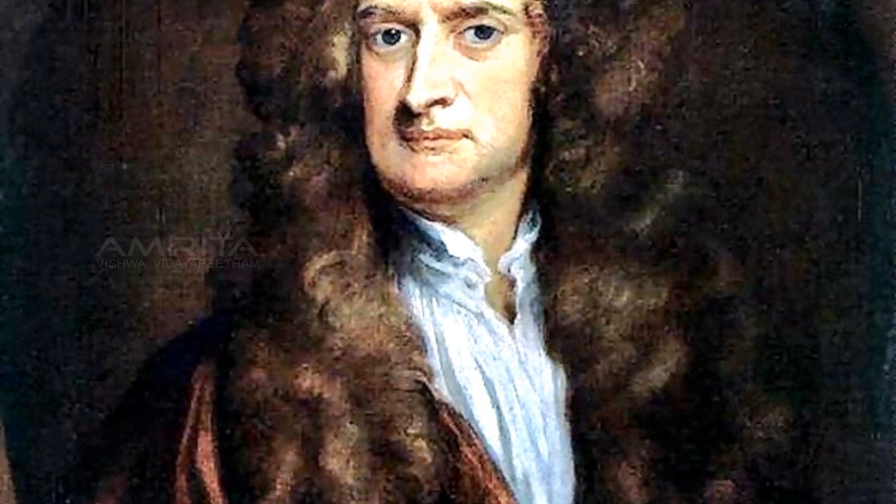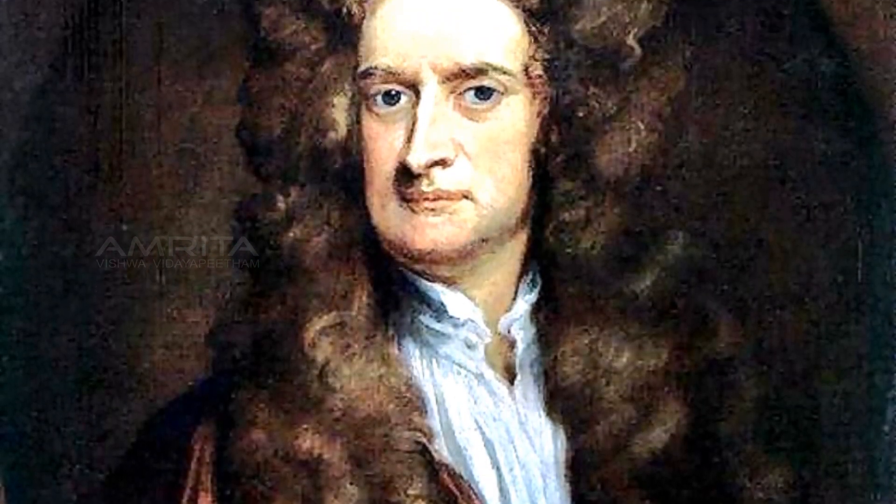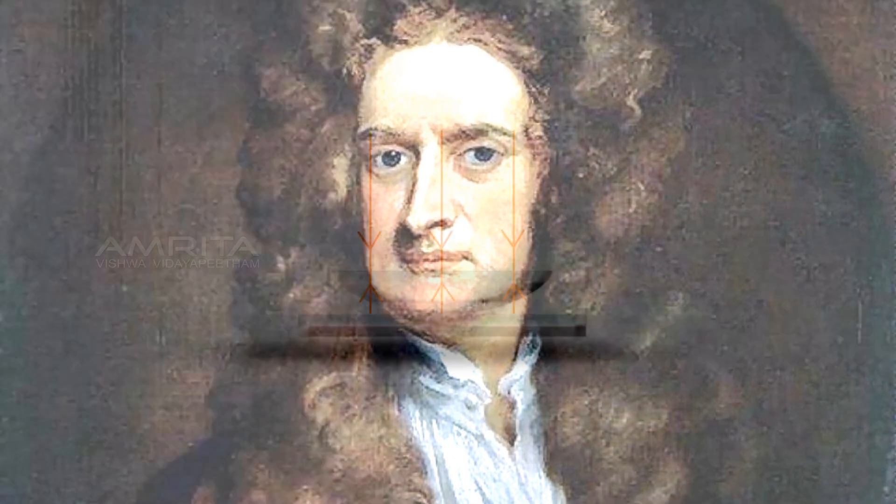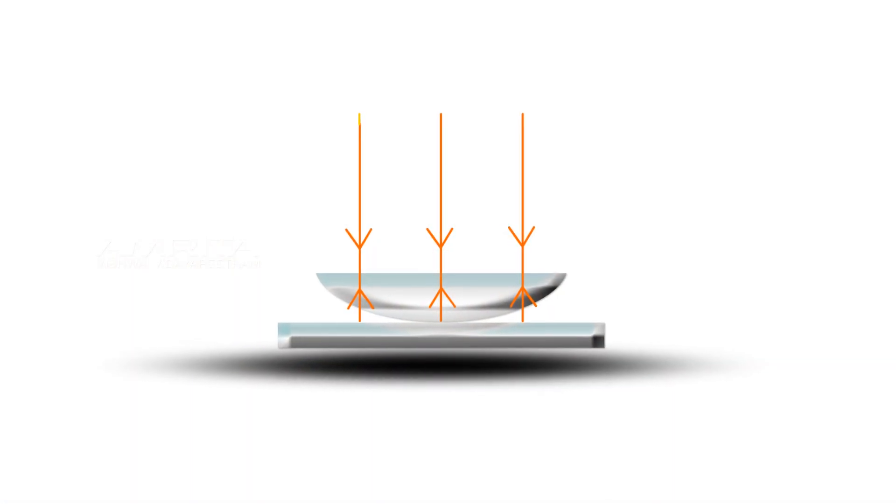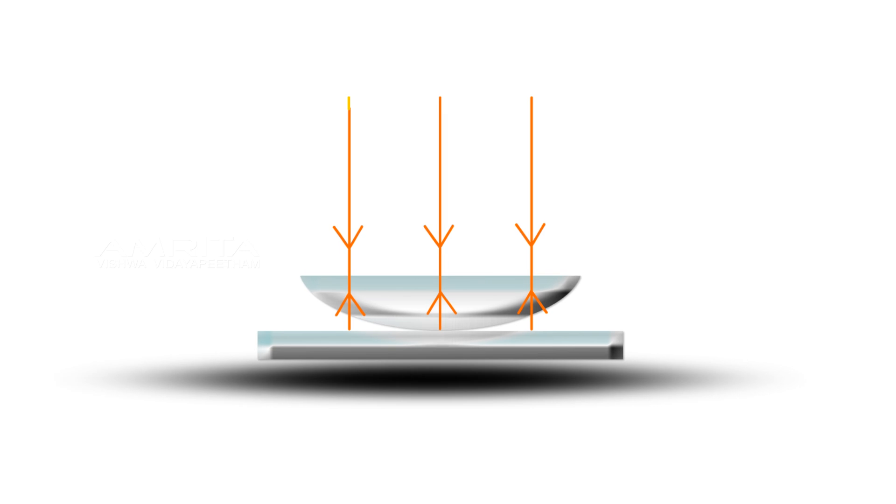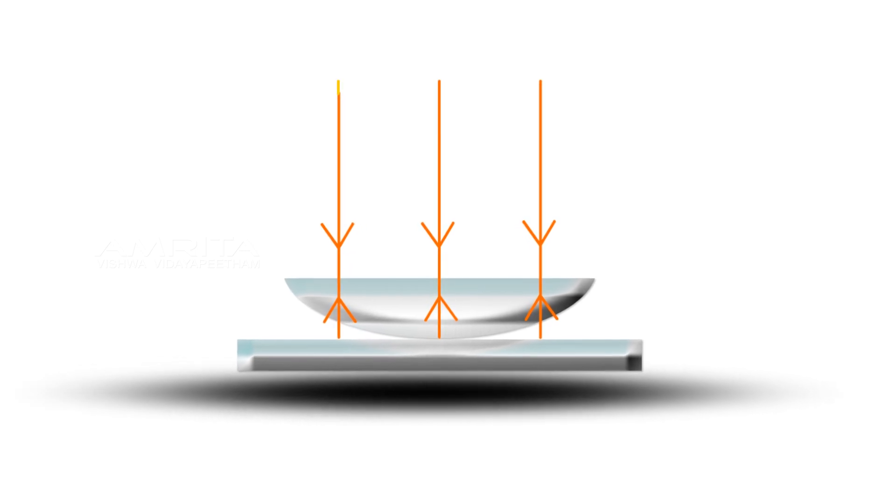The phenomenon of Newton's rings, named after Isaac Newton, is an interference pattern caused by the reflection of light between two surfaces: a spherical surface and an adjacent flat surface.